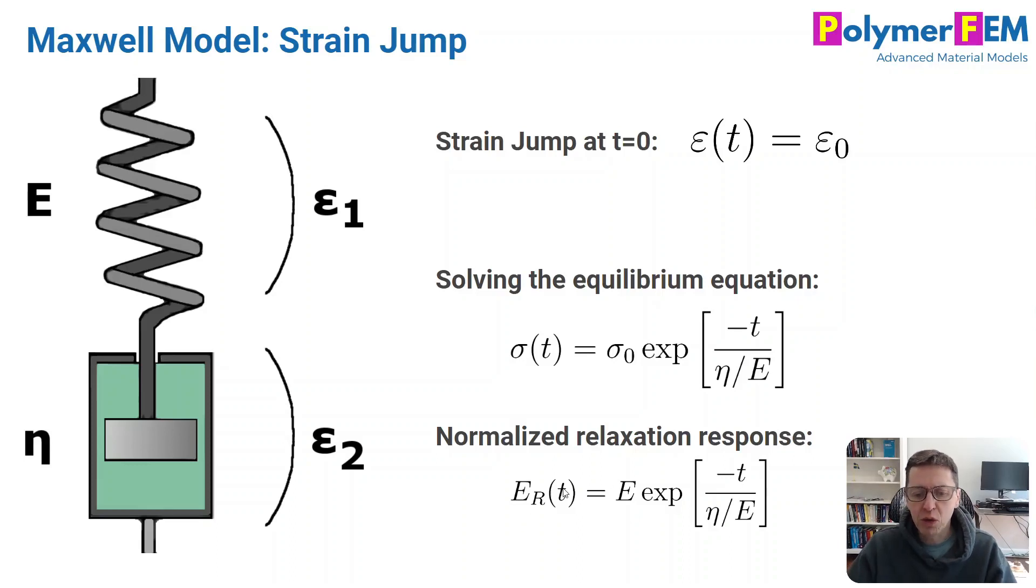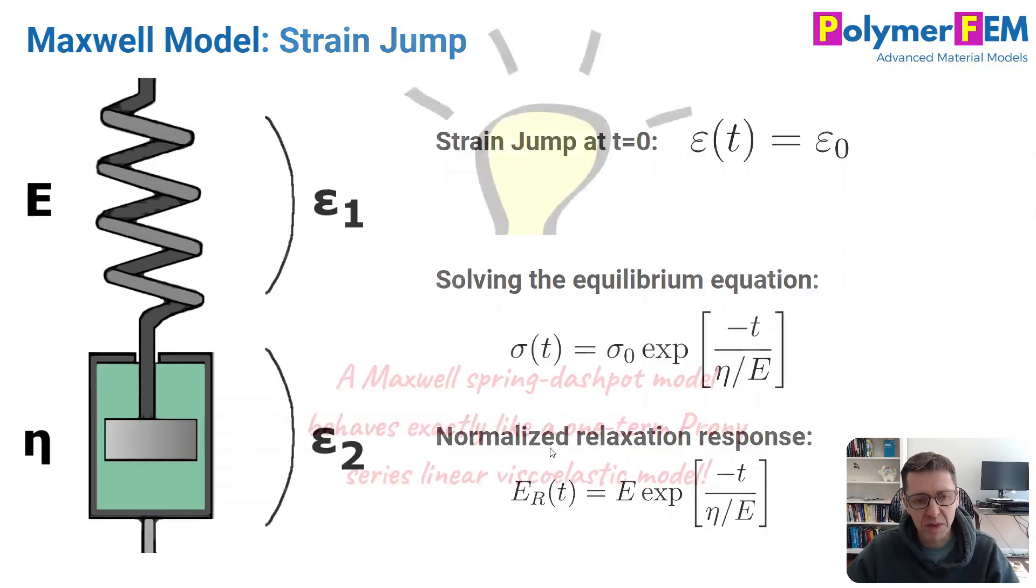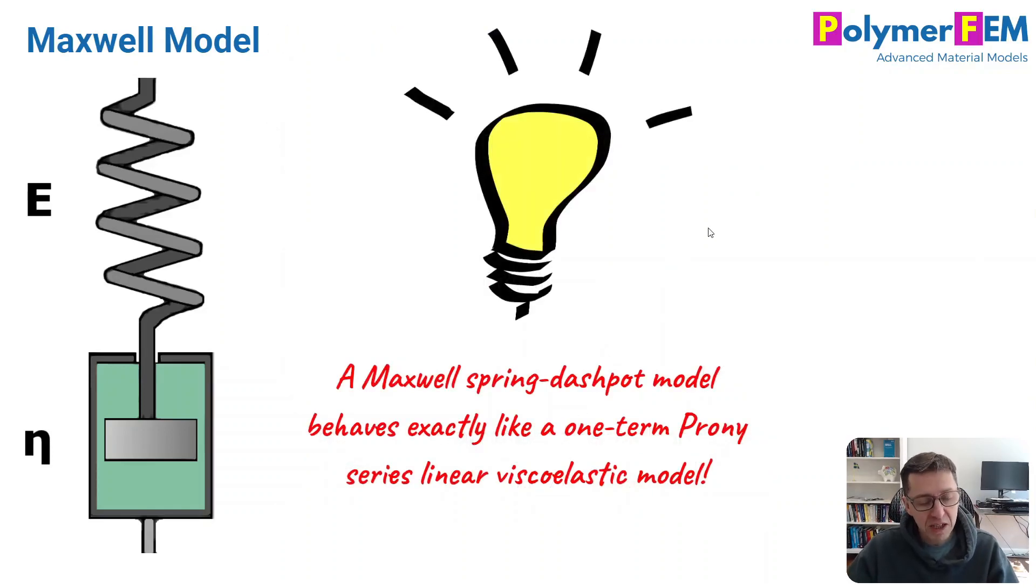And here is what it is. And what's really cool about this is that this is in fact the equation that we have also for a linear viscoelastic Prony series that we talked about from the integral formulation before. So what we have proven is in fact that a Maxwell spring dashpot like this behaves exactly like a one Prony series term linear viscoelastic model. They're equivalent mathematically in terms of what stress and strain they predict.